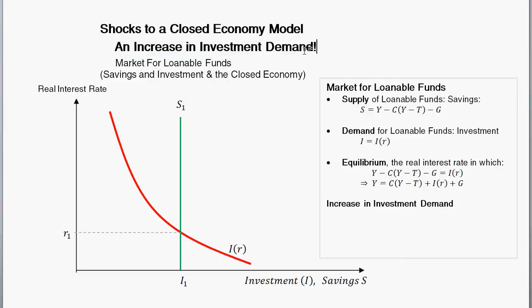Where might a change in investment demand come from? Technological innovation is one example. Suppose some technology comes along that makes firms more productive — like computers or the internet. In order for firms to take advantage of those improvements in IT, they need to invest in capital: buy computers, buy mainframes, train people, and so on. So they need to borrow money in order to invest in that improved technology. Another way would be if government incentivized investment by changing the tax structure in some way. So these are things that could increase investment demand.